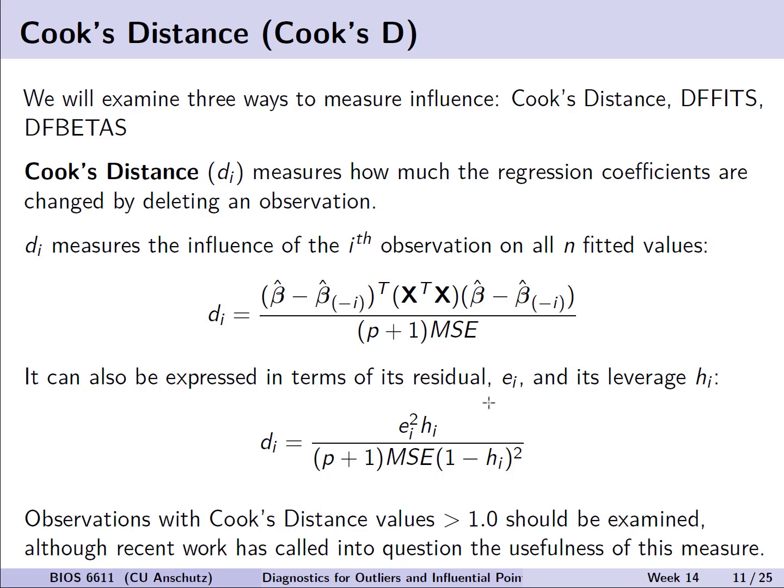There's other ways we can actually measure numerically potential influence, and this includes Cook's distance, the DFFITS, and the DFBETAS. Cook's distance, also called Cook's d, measures how much of the regression coefficients are changed by deleting an observation. We see here an equation for d_i with respect to our matrix notation. We can also express it in terms of our residual e sub i and the leverage. In most cases, we're actually going to use statistical software to calculate these values for us, and we can note that observations where Cook's d is greater than 1 should be examined for their potential high influence. However, some recent methods work has called into question the usefulness or sensitivity of this measure.